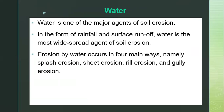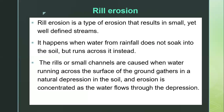Water is one of the major agents of soil erosion. We said that erosion caused by water occurs in four main ways: splash erosion, sheet erosion, rill erosion, and gully erosion. So far we have discussed splash erosion and sheet erosion. Today let's finish up by discussing rill erosion and gully erosion.